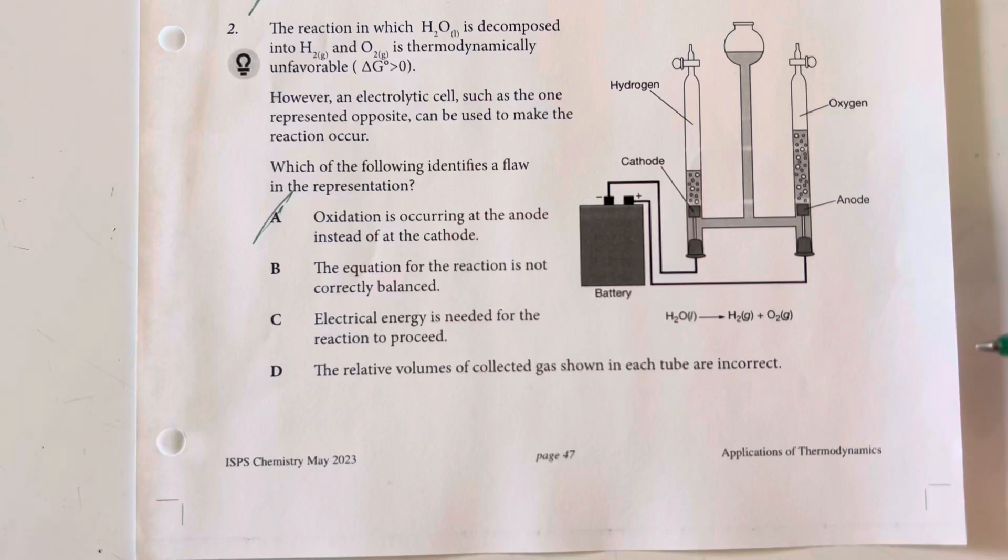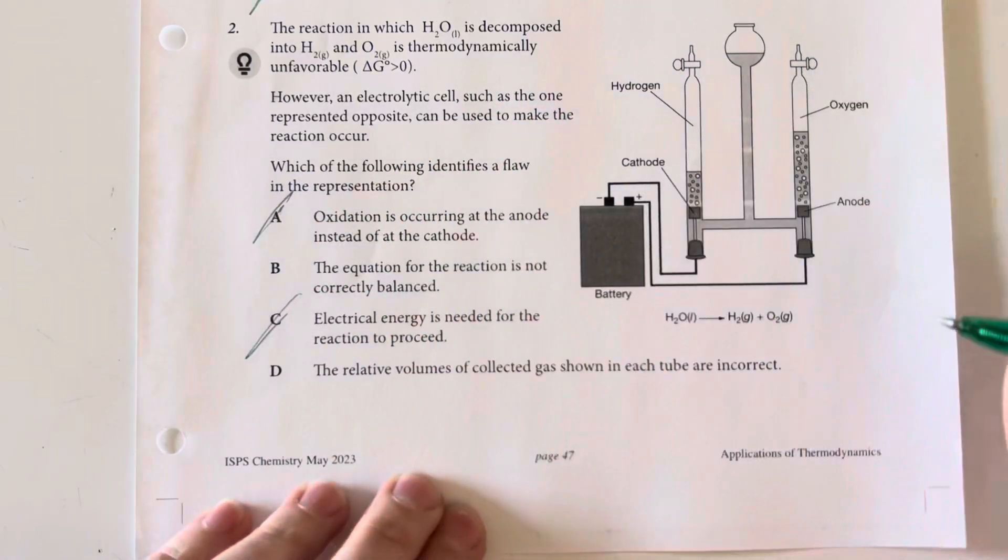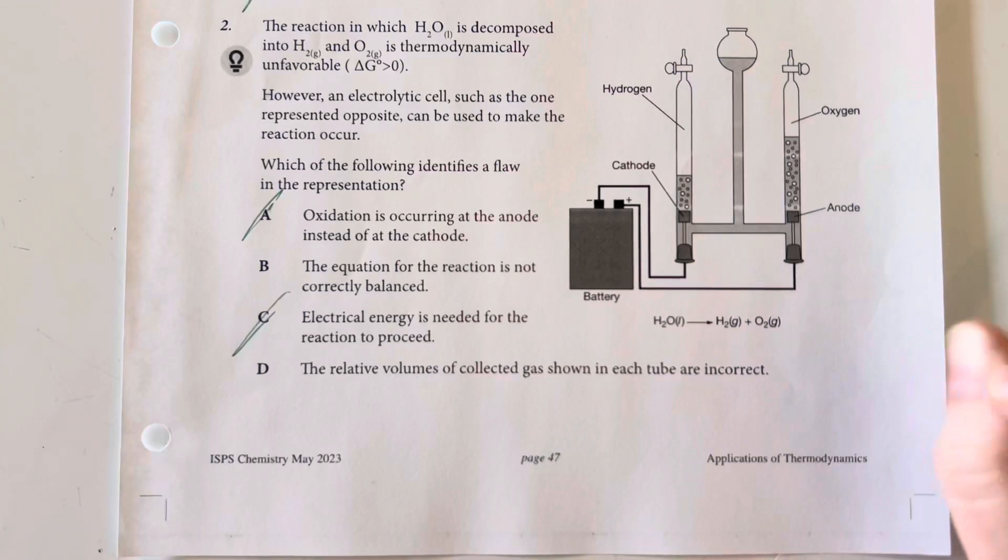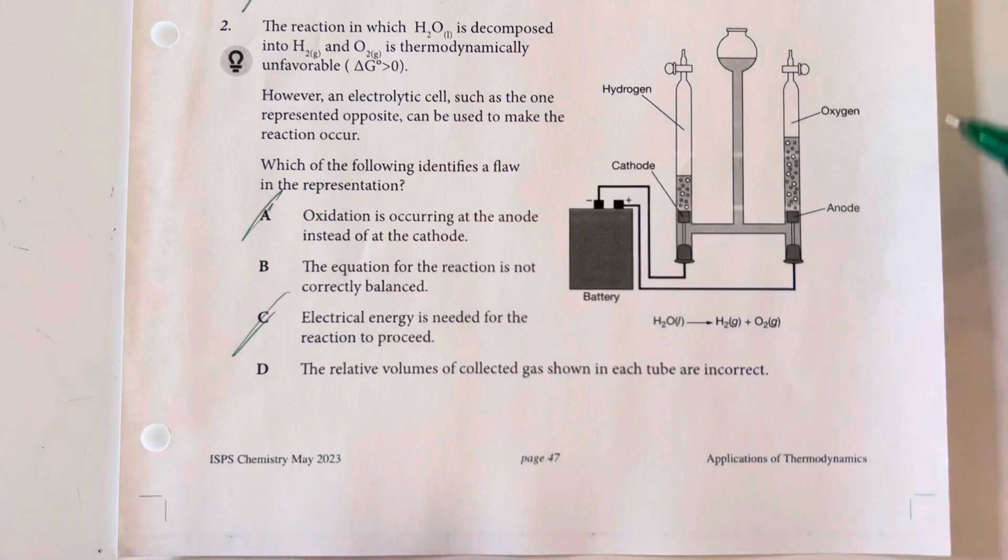The electrical energy is needed for the reaction to proceed. That is not a flaw. That is a feature of the reaction, of it being an electrolytic cell. And then the relative volumes of the collected gases shown in each tube are incorrect. Again, we should have approximately twice the amount of hydrogen than oxygen.